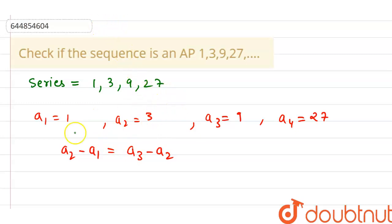So now we are checking the difference. a₂ is 3 and a₁ is 1, a₃ is 9 and a₂ is 3. So now we can clearly see that 2 is not equal to 6.